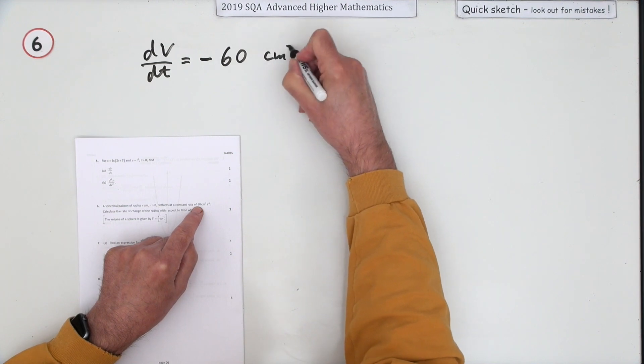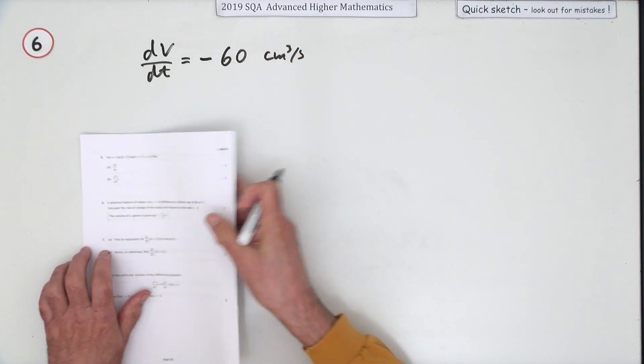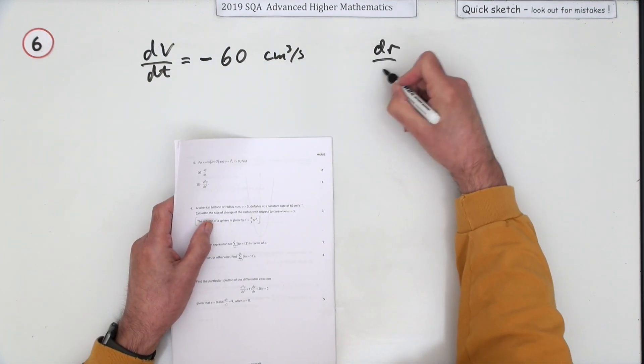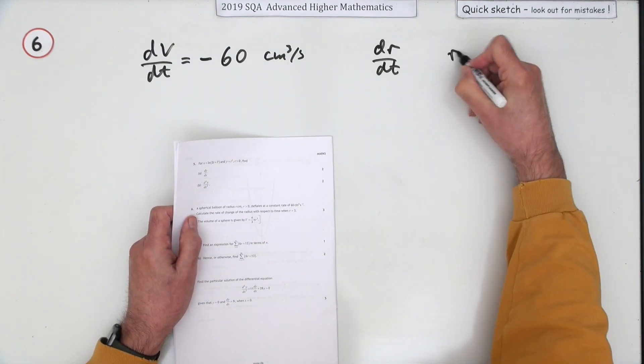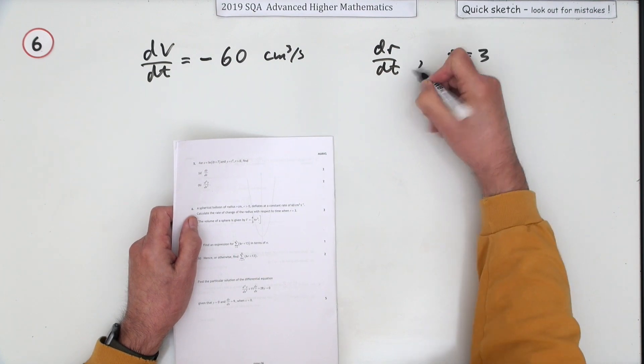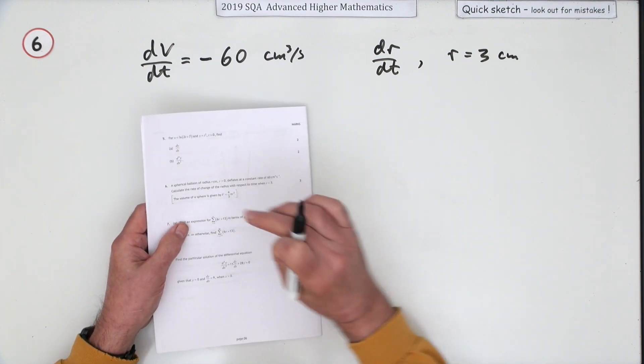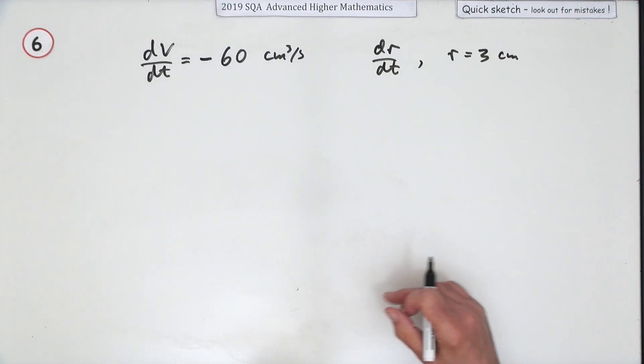So it's negative 60 centimeters cubed per second. Calculate the rate of change of the radius, so you're looking for dr/dt at a time when r equals three, presumably centimeters. And in case you don't remember, the volume of a sphere is 4/3πr³.